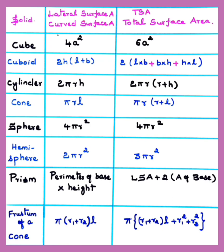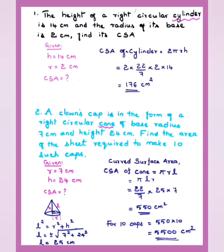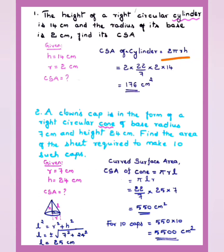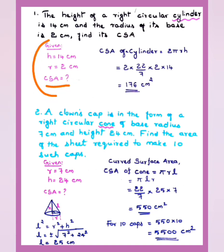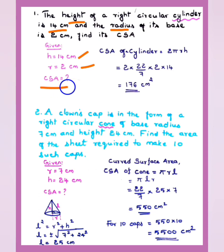Now let's move to the solutions. Problem 1: The height of a right circular cylinder is 14 cm and the radius of its base is 2 cm. Find the CSA. We can immediately identify this as a cylinder curved surface area problem. The formula is CSA = 2πrh. Given: h = 14 cm, r = 2 cm. When you list out the given values and what is to be found, half the problem is already solved.